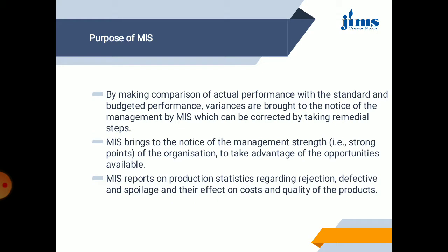By comparing actual performance with standard and budget performance, variance is brought to the notice of management by MIS, which can then be corrected by remedial steps. MIS also brings to the notice of management the strengths — the strong points — of the organization, to take advantage of opportunities. For example, if a product is performing well in the market, the positive feedback and strong characteristics are identified so that those strengths can be leveraged as market opportunities.